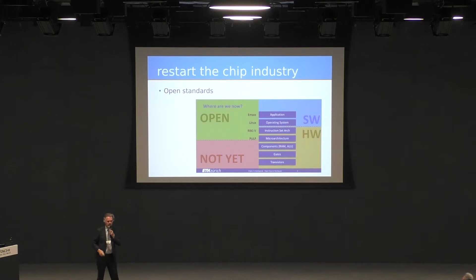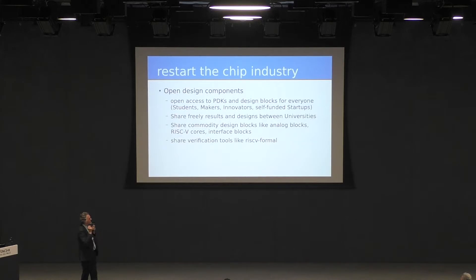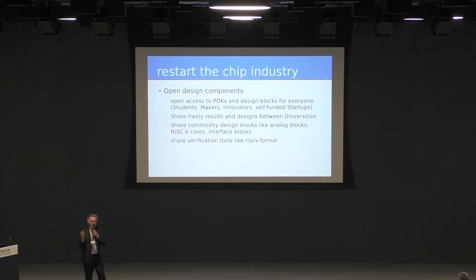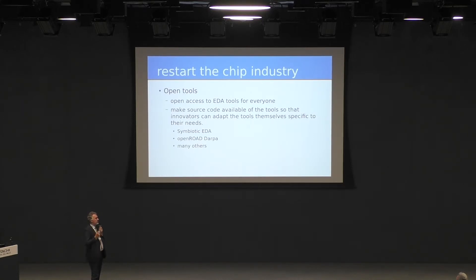What do we need to restart the industry? Open design components — like open source PDKs — so that universities can share designs and share GDS2 files, enabling real innovation. Share commodity blocks: analog, DLL, band gap, voltage reference — all those commodity blocks should be freely available as open source. The same way we provide RISC-V formal verification. We need open tools, freely available for everyone and available as open source, so that designers can adapt the tools to their own needs. Let's give them the source code so they can adapt it themselves.